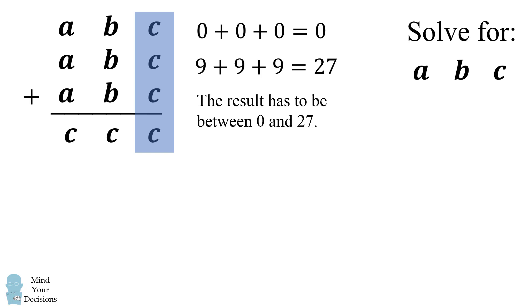Therefore 3 times c will either be equal to c as a one-digit number, or it'll be a two-digit number that's between 10 and 20, 3c is equal to 10 plus c, or it'll be between 20 and 27, 3c is equal to 20 plus c. These are the three possible cases to consider. Let's consider each one.